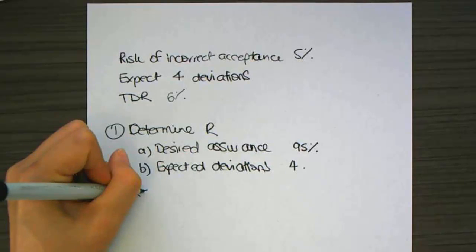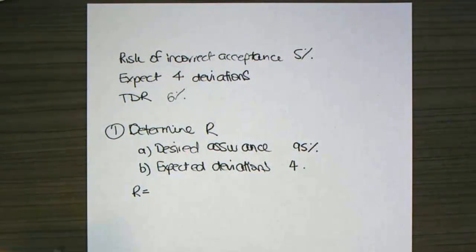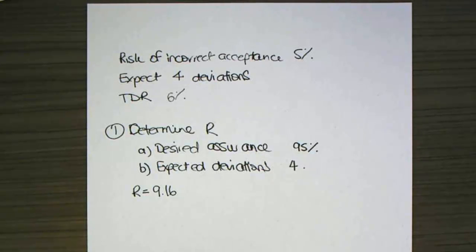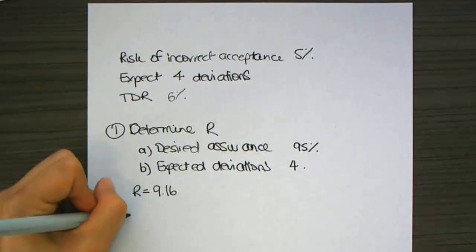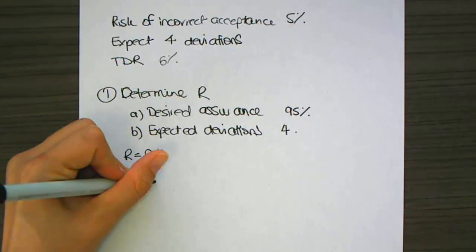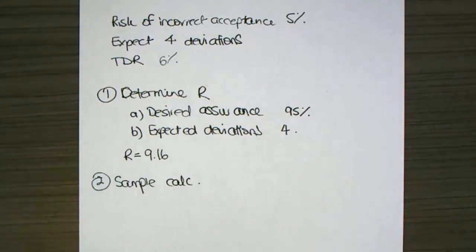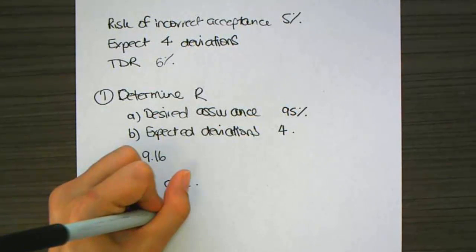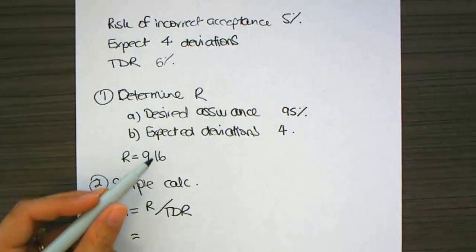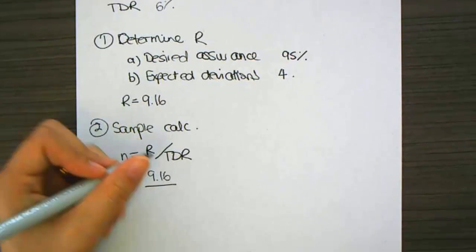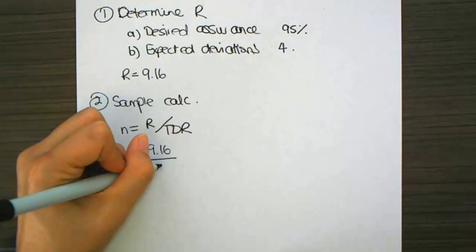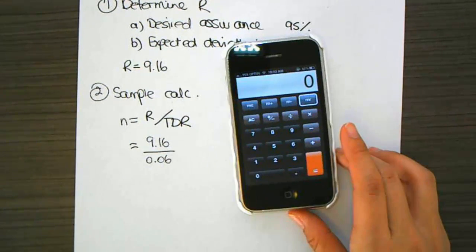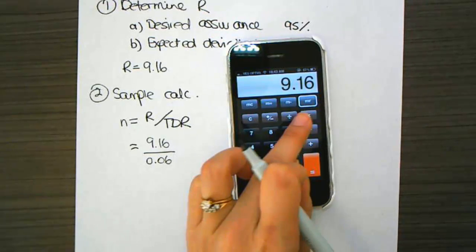The second step is the sample calculation. N equals R divided by TDR. I know my R is 9.16. My TDR is 6%. So let's get my calculator out. 9.16 divided by 6%. Give me a sample of 153 transactions. I've rounded up there to the nearest whole transaction.